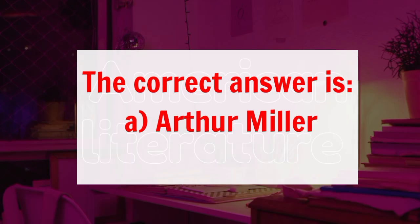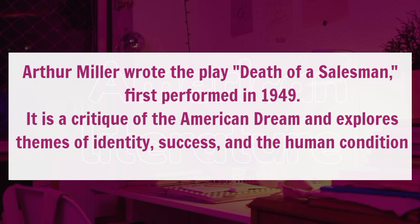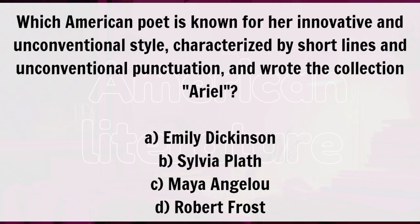Arthur Miller wrote the play Death of a Salesman, first performed in 1949. It is a critique of the American dream and explores themes of identity, success and the human condition.